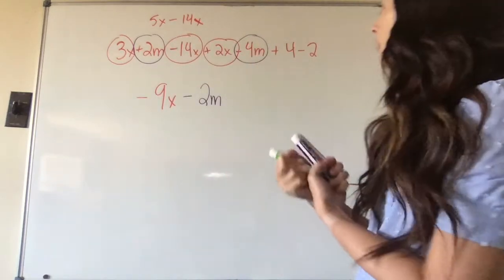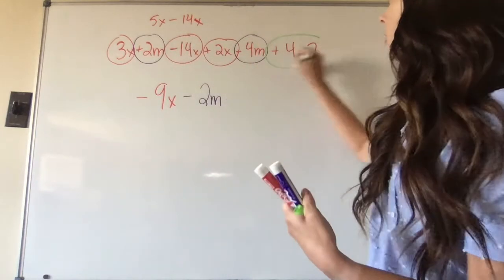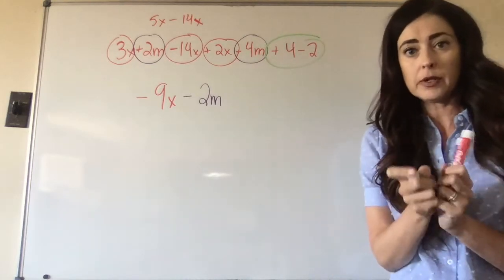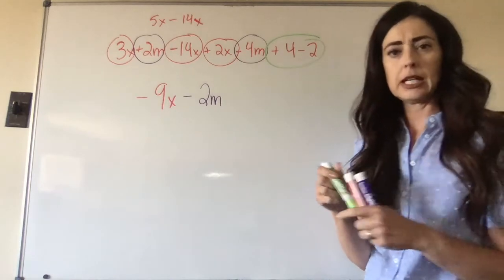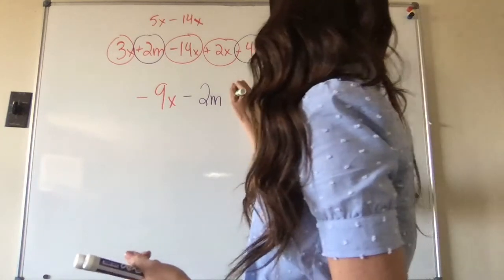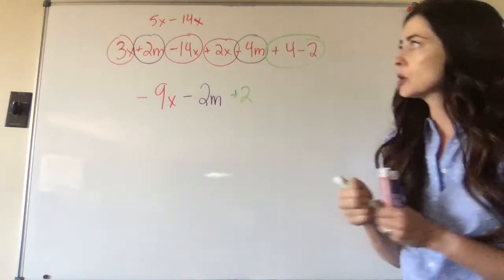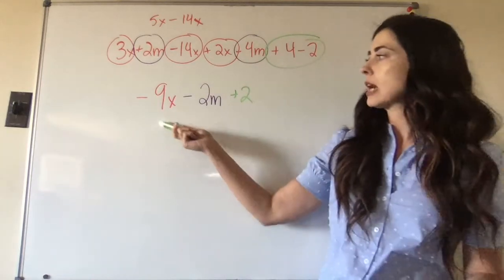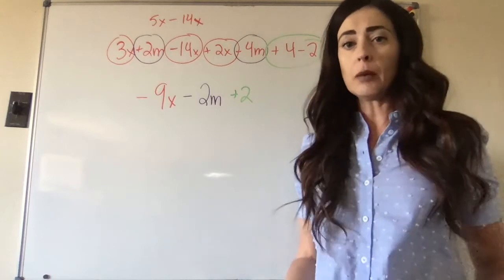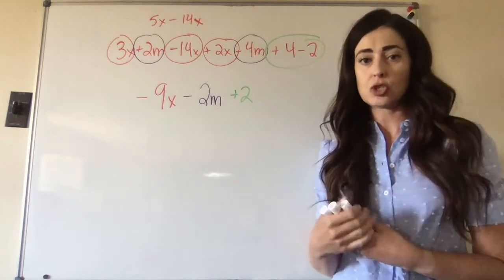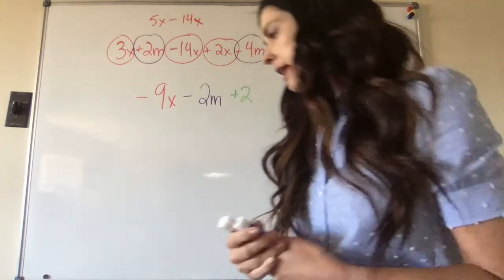And then we have our constants over here, or our terms that are whole numbers. What's 4 minus 2? 2 is 2. So the answer when we simplify this is negative 9x minus 2m plus 2. And that's the answer. I know in math we're used to getting one number as an answer, but this is the answer for that example.